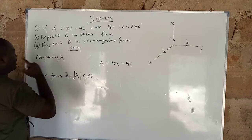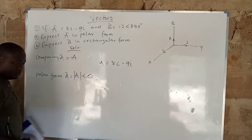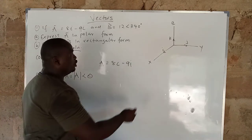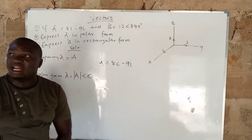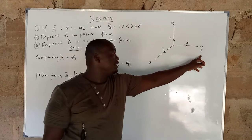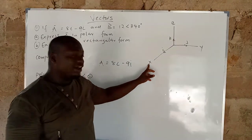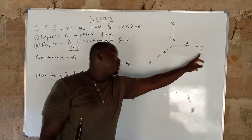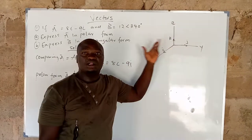Remember, under vectors we divide it into three Cartesian coordinates: X, Y, and Z. Under vectors, X always goes with i, Y always goes with j, and Z always goes with k.